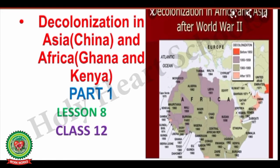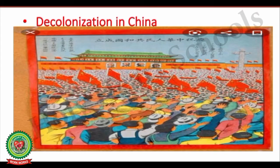Good morning students. Today we are going to discuss Chapter 8 of your ISC Plus 2 history book. The name of the chapter is Decolonization in Asia and Africa, and in this chapter we will discuss the decolonization in China, Ghana and Kenya. In the first module we will be discussing the decolonization or independence struggle of China.